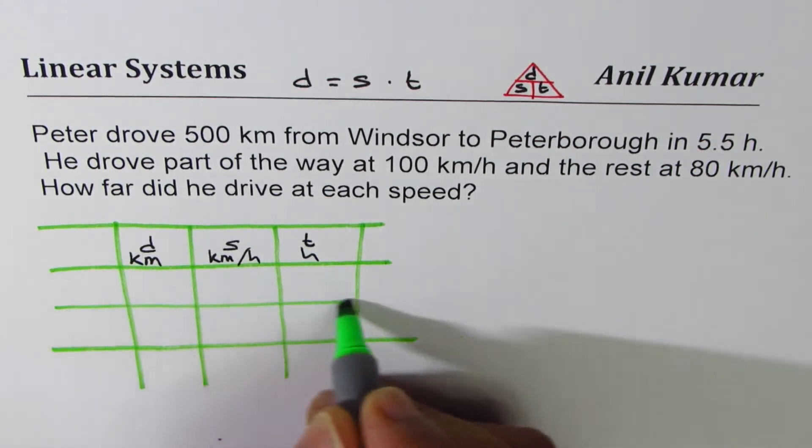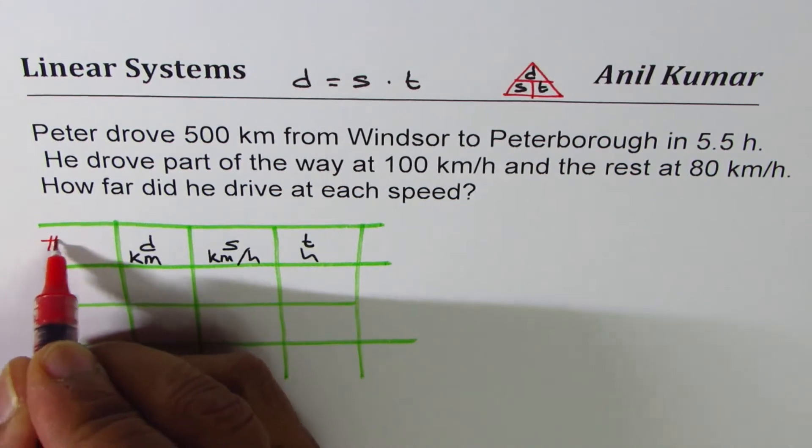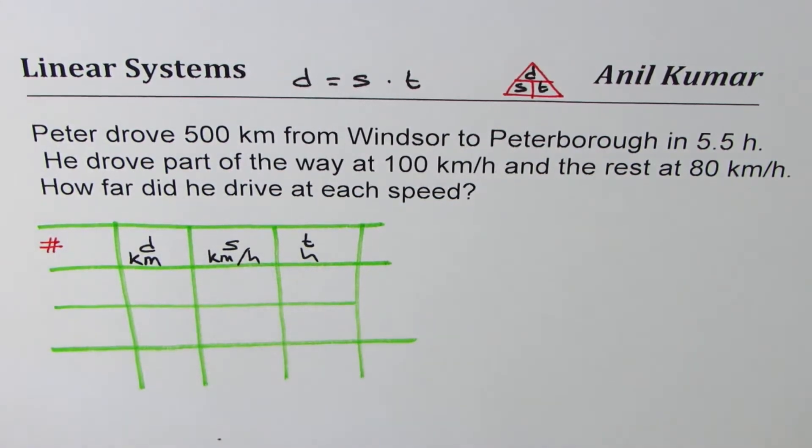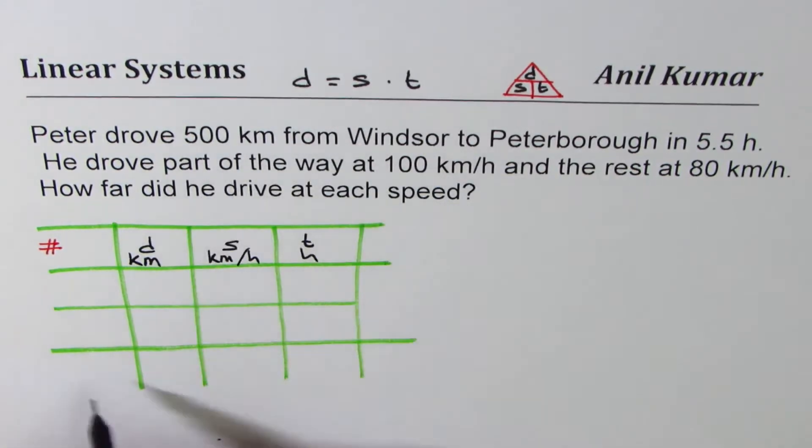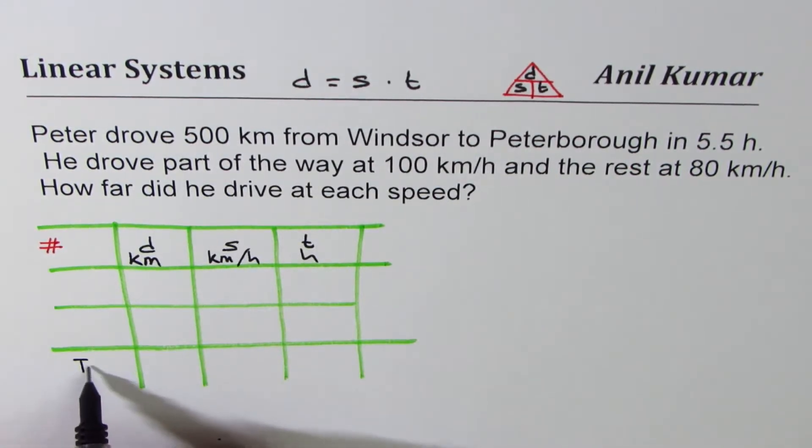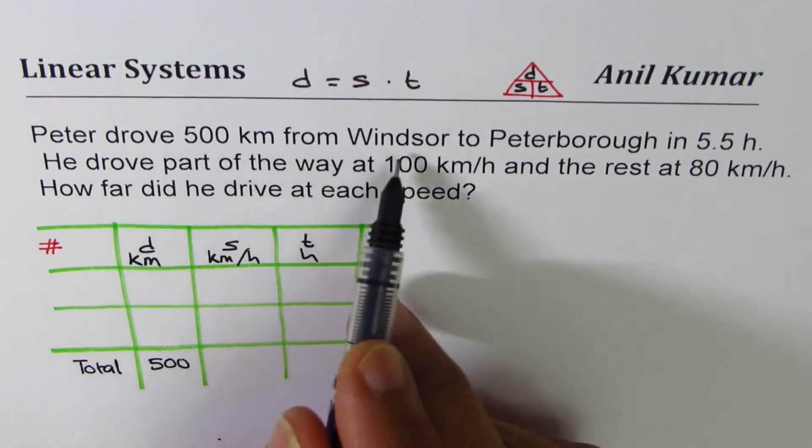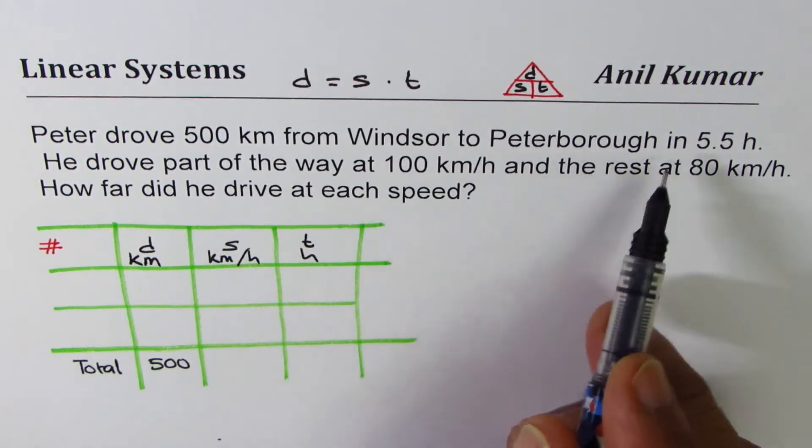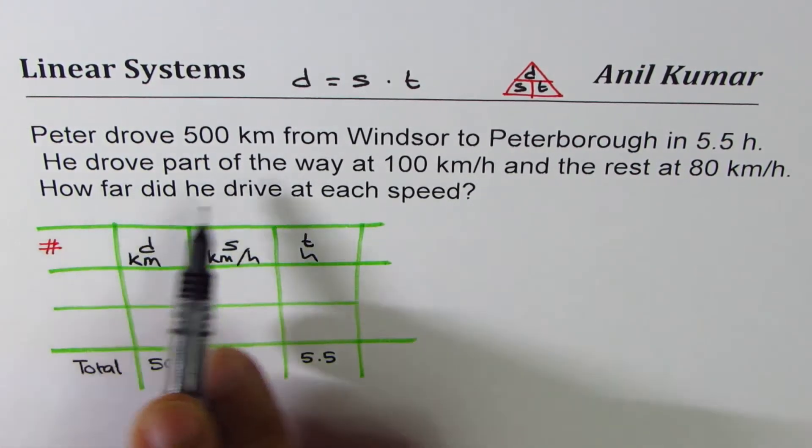Peter drove 500 kilometers, that's the total distance. So the activity is: he drove 500 kilometers from Windsor to Peterborough in 5.5 hours, that is total time.